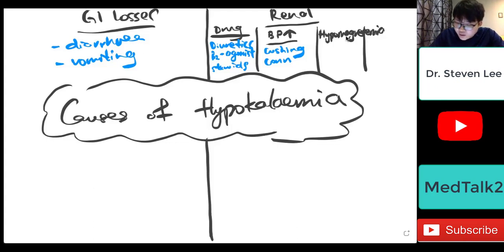So number four, this one is what we call as some rare causes. Normally in the ward, I don't really think about it, but in terms of exam, like for example, MRCP part one, it's their favorite question. The three diseases that can cause hypokalemia, which are Bartter syndrome, Gitelman syndrome, and also the Liddle syndrome.